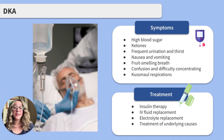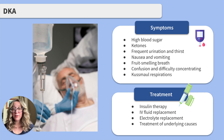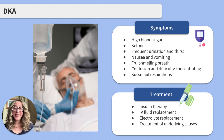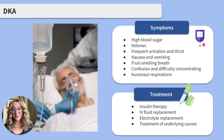Once a client has been diagnosed with DKA, treatment typically consists of insulin therapy to reduce blood glucose levels and ketone levels, IV fluid replacement to help dilute excess glucose in the blood, electrolyte replacement, and treatment of any underlying causes such as infections.